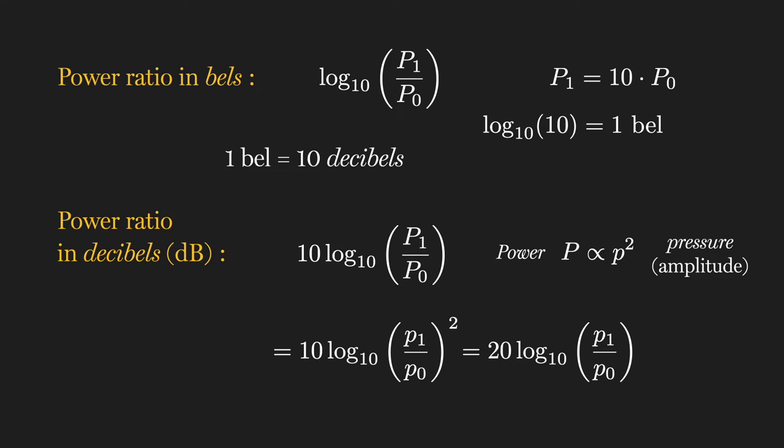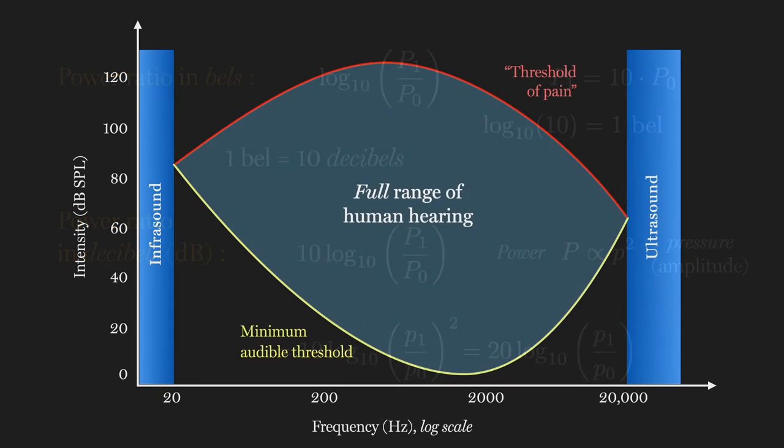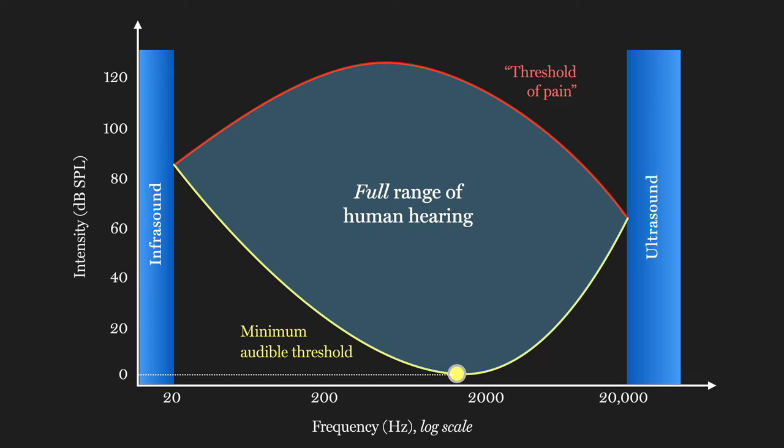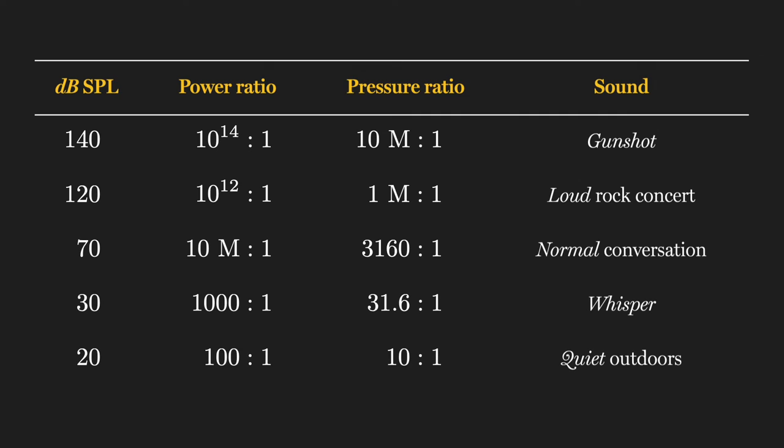In the case of sound, we use the sound pressure of a 1000 Hz tone at the minimum audible threshold, which is about 20 micropascals of pressure. Comparing to this reference gives us dB sound pressure level, or SPL. Here are some representative sounds in dB SPL. You can see that human hearing has an enormous dynamic range, able to handle sound pressures that differ by a factor of 10 million.